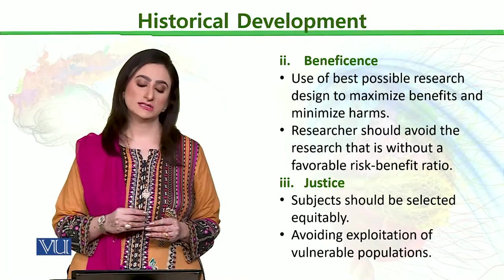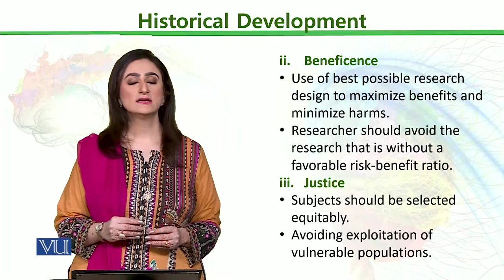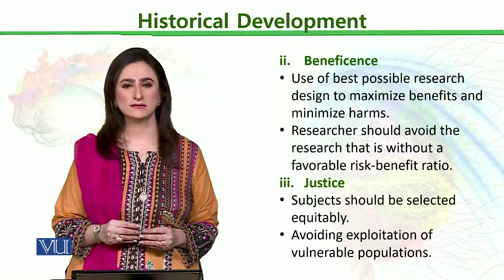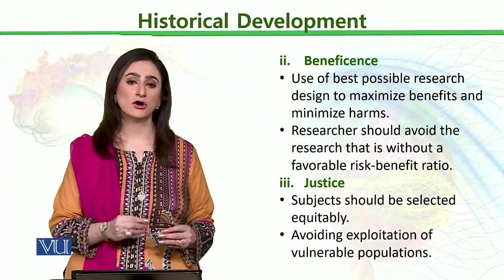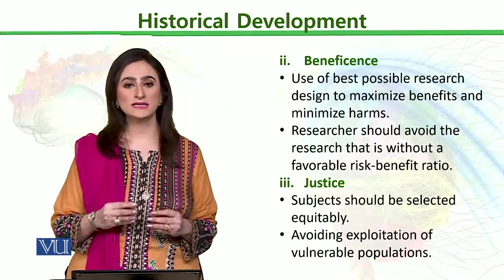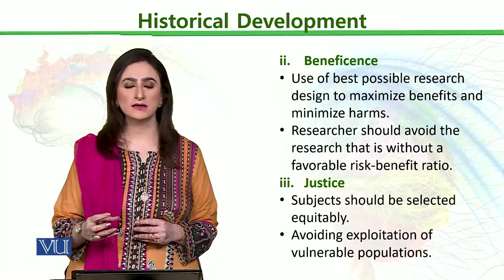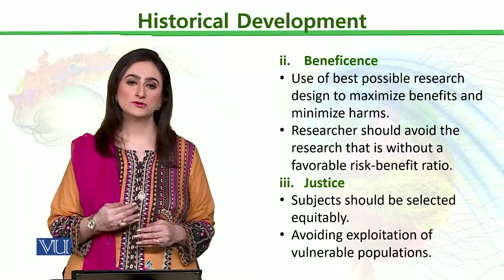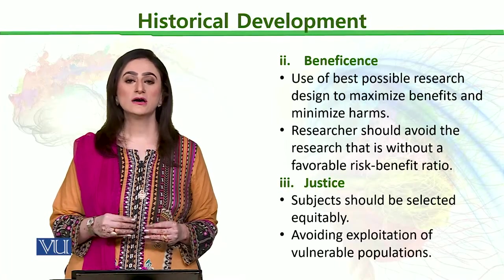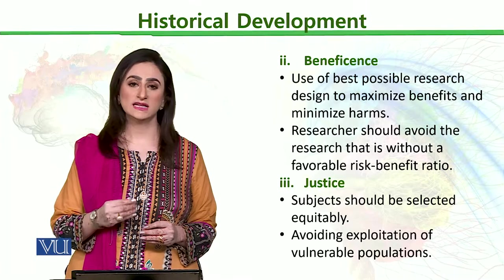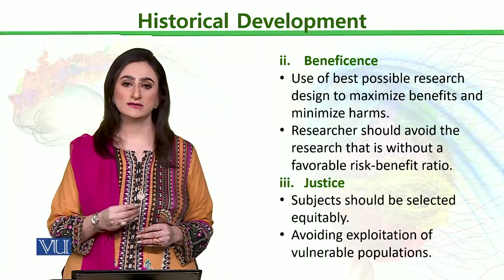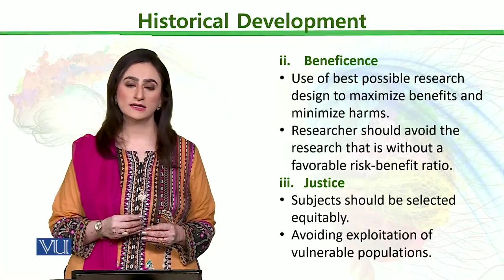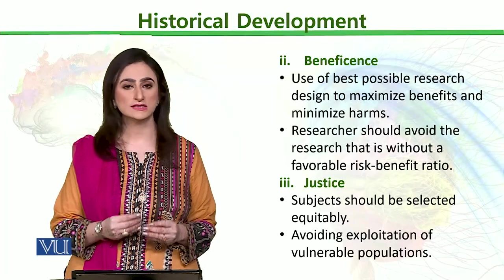The third important principle is justice. Subjects should be selected on an equal basis as equitable human beings. We cannot target only vulnerable populations, particular minority groups, or people who are in prison or facing difficult circumstances, and conduct research on them. In history, live cancer cells were injected into the skin of prisoners and experiments were conducted on them. Justice means you cannot conduct this kind of research on such human subjects.